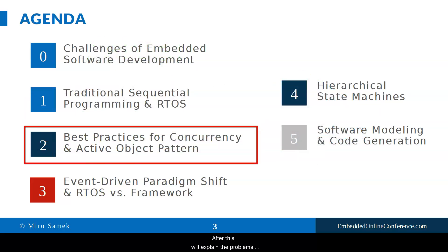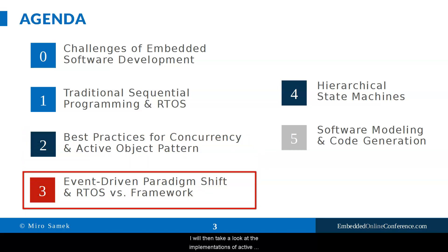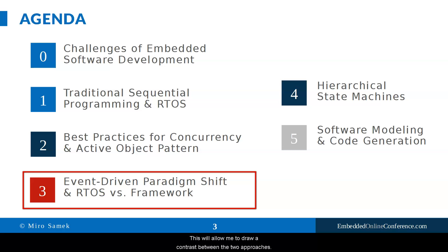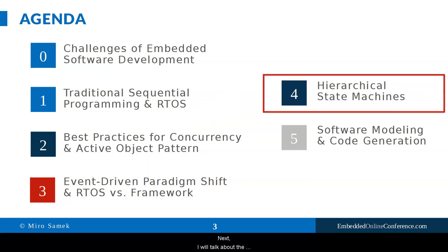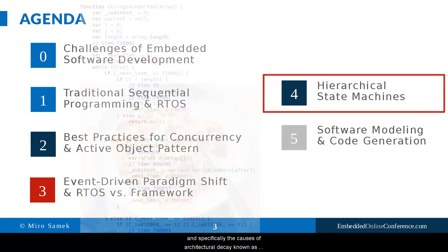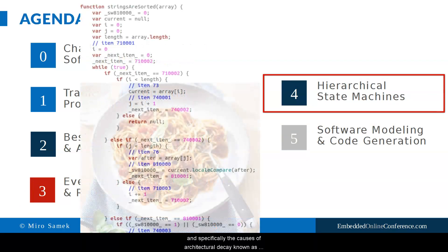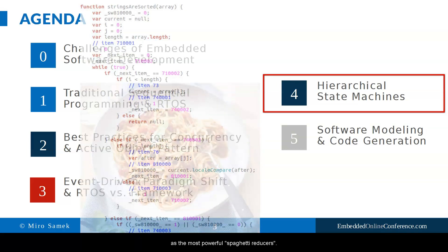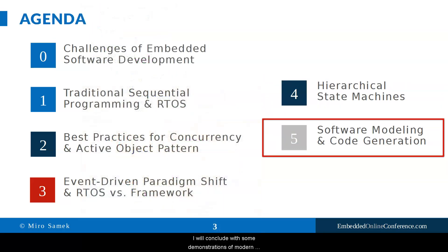After this, I will explain the problems caused by blocking of RTOS threads and the best practices of concurrent programming known as the active object design pattern. I will then look at implementations of active objects in deeply embedded systems — first on top of a traditional RTOS, and then with an event-driven framework. Next I will talk about the challenges of event-driven programming, specifically the causes of architectural decay known as spaghetti code. I will introduce modern hierarchical state machines, and conclude with demonstrations of modern embedded software based on real-time embedded frameworks, model-based design, and automatic code generation.